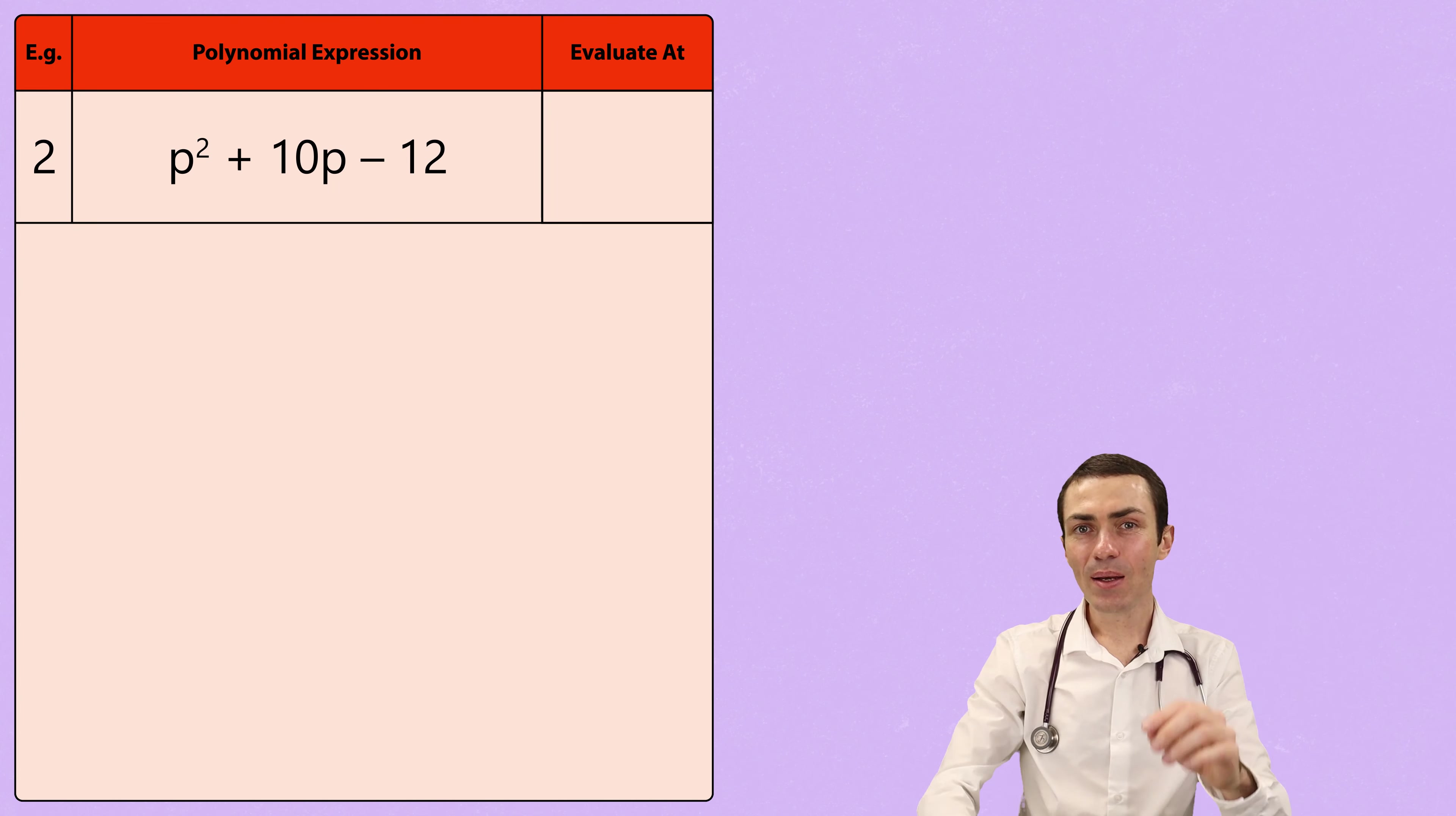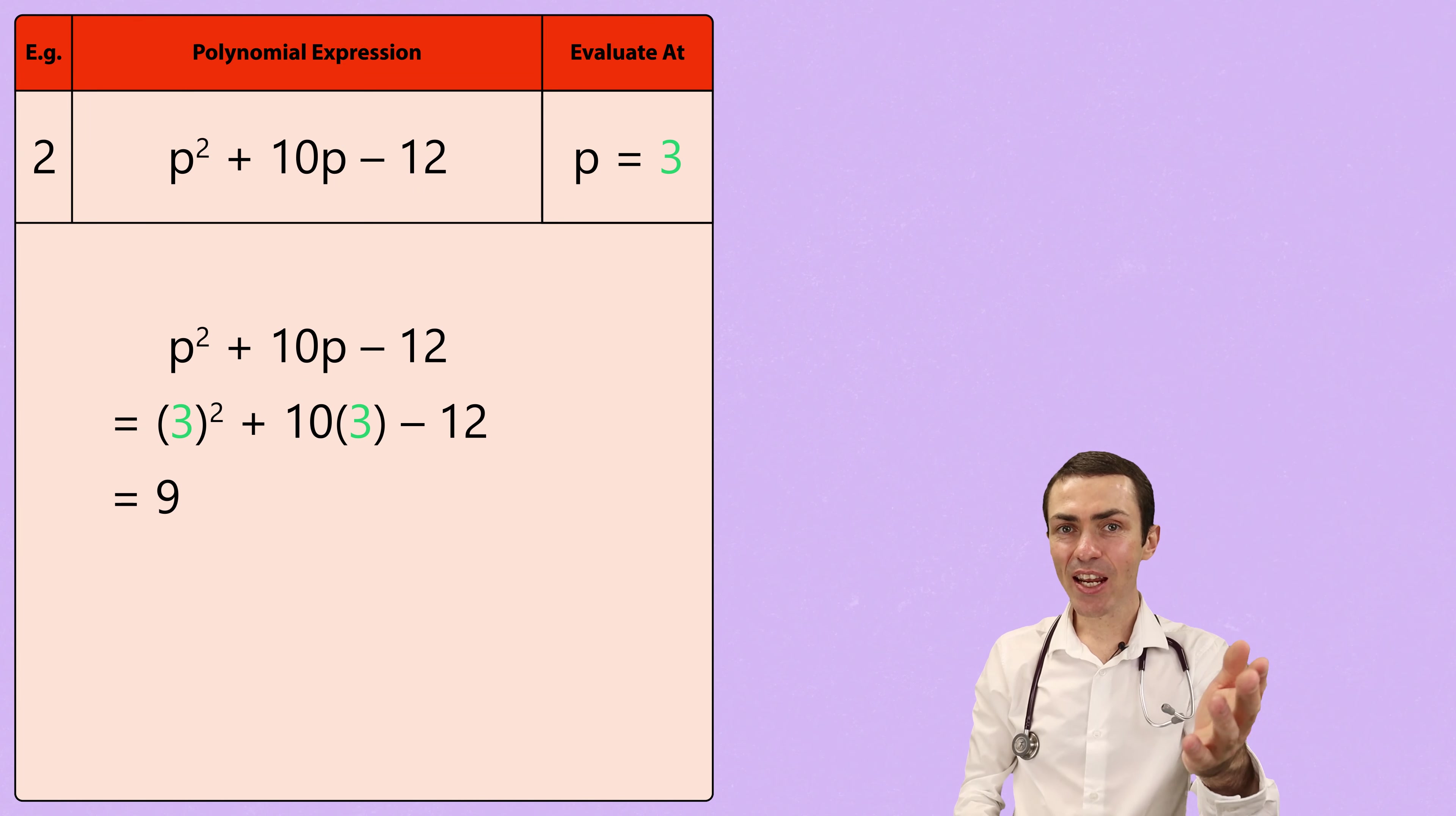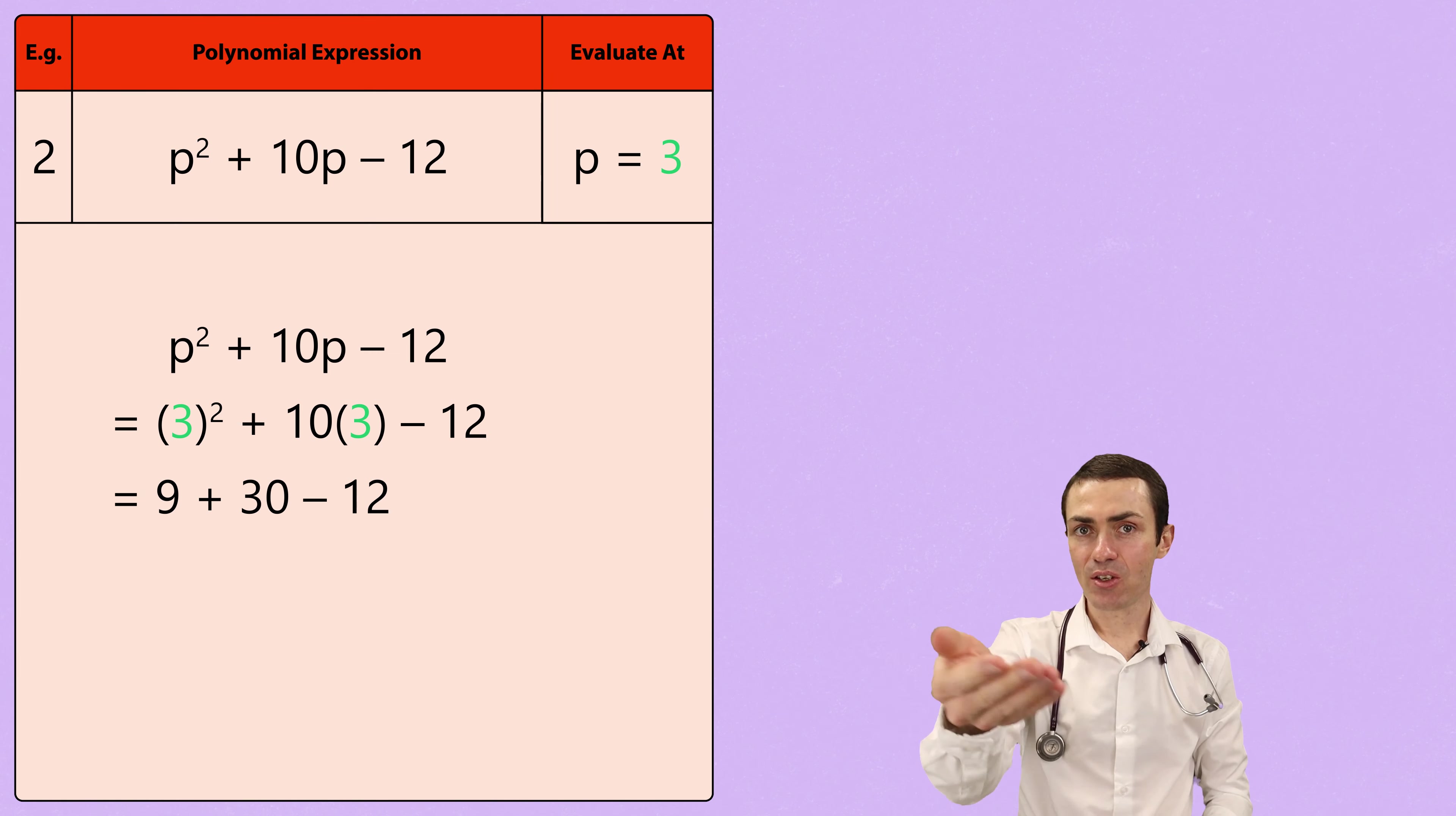Next, let's evaluate p squared plus 10p minus 12 at p equals 3. Remember, wherever we see a p, simply replace it with a 3. So 3 squared gives us 9, 10 multiplied by 3 gives us 30, and then we have to subtract 12. So 9 plus 30 minus 12 gives us 27.